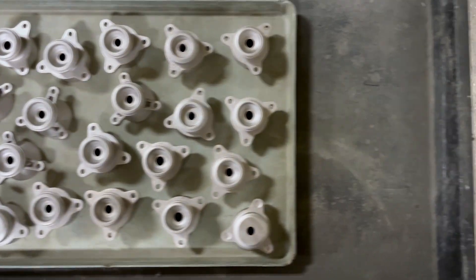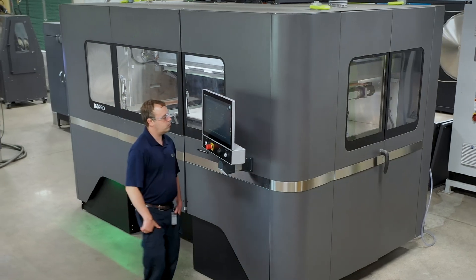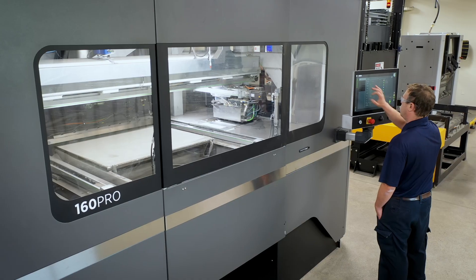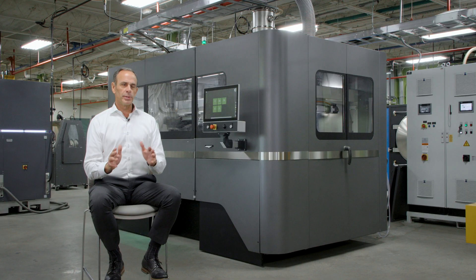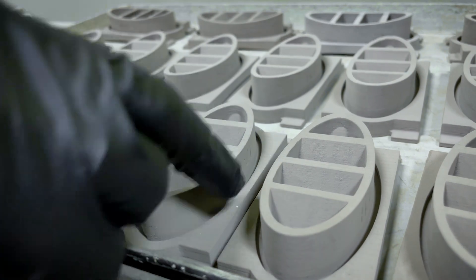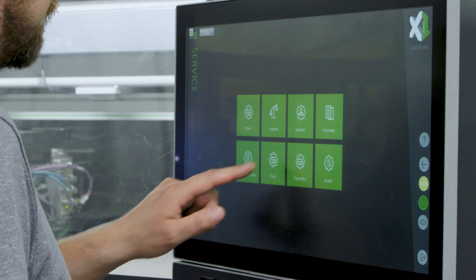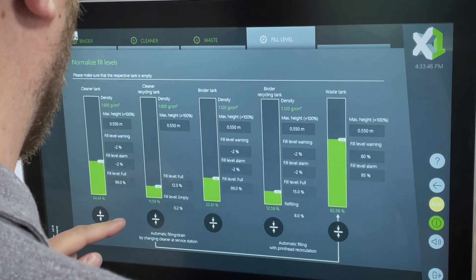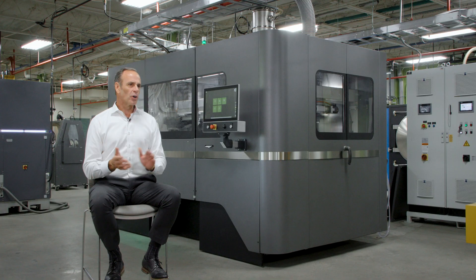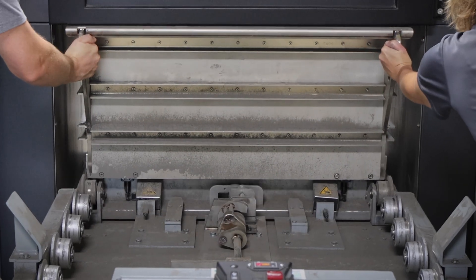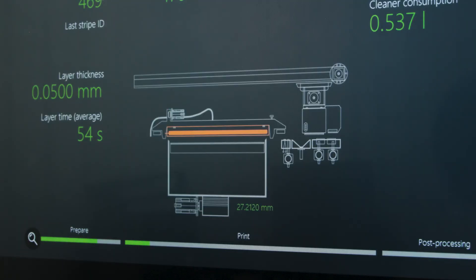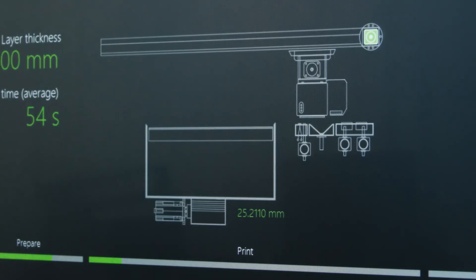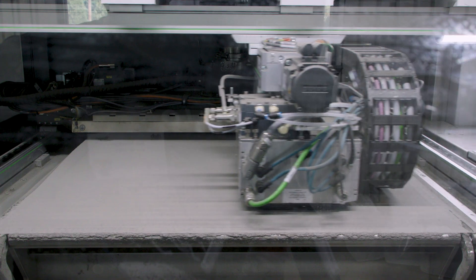We're particularly excited to have the 160 Pro in our technology center. It's really the foundation of what we see our business doing going forward for volume production. Its integrated material management system is really second to none in the marketplace. Our goal really is to take the 160 platform, push it towards automation that allows easy integration with continuous sintering and essentially a completely lights out cell.